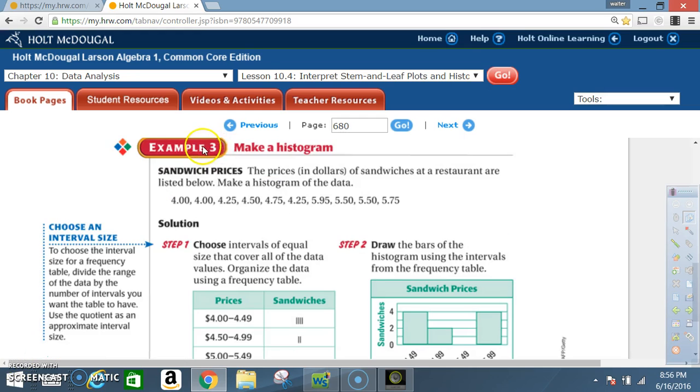Example 3: Make a histogram. Sandwich prices. The prices in dollars of sandwiches at a restaurant are listed below. Make a histogram of the data. So here we have our prices.